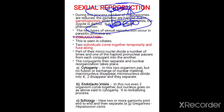When it comes to cytogamy, in this case two organisms pair but there is no fusion or exchange of nuclear material. The macronucleus disappears and the micronucleus divides into four, two disappear, and they separate. In cytogamy, two protozoans come together but there is no exchange of nuclear material.